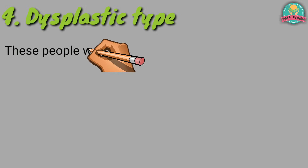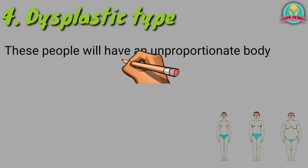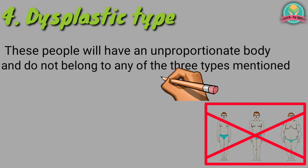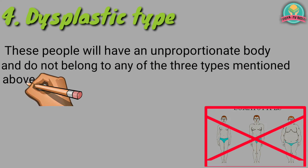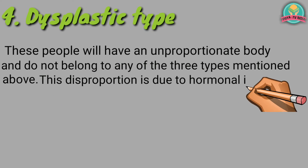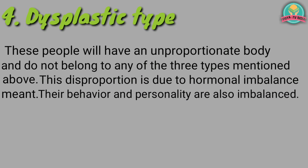Number 4: Dysplastic type. These people will have an unproportionate body and do not belong to any of the three types mentioned above. This disproportion is due to hormonal imbalance. Their behavior and personality are also imbalanced.